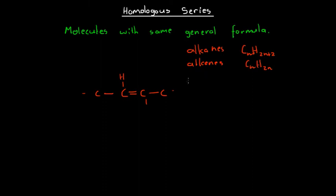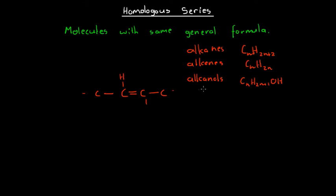If we wanted to write a general formula for alkanols, then it would simply be CnH2n+1OH. We can do this for all our different basic functional group molecules — so we could write a general formula for carboxylic acids, and we could write a general formula for amines as well.